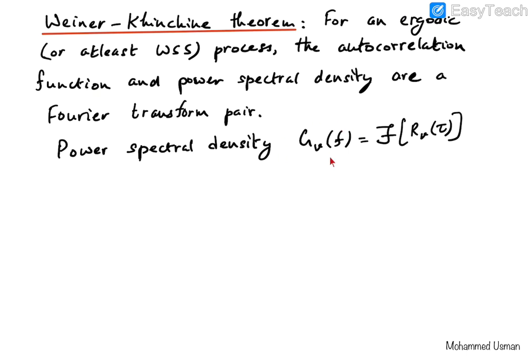Mathematically, the power spectral density GV(f) is defined as the Fourier transform of the autocorrelation function Rv(tau). We write Rv(t1, t2) as Rv(tau), since for the randomly phased sinusoid the autocorrelation function depends only on the time difference tau = t1 - t2. By taking the Fourier transform of the autocorrelation function, we can obtain the power spectral density of the randomly phased sinusoid.